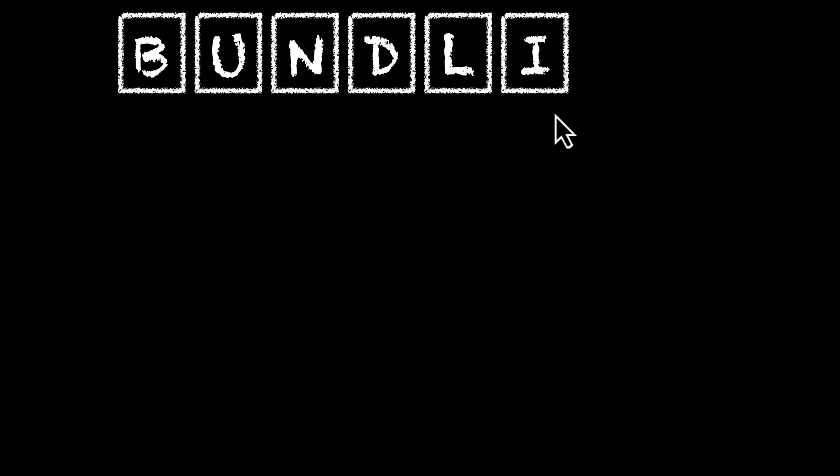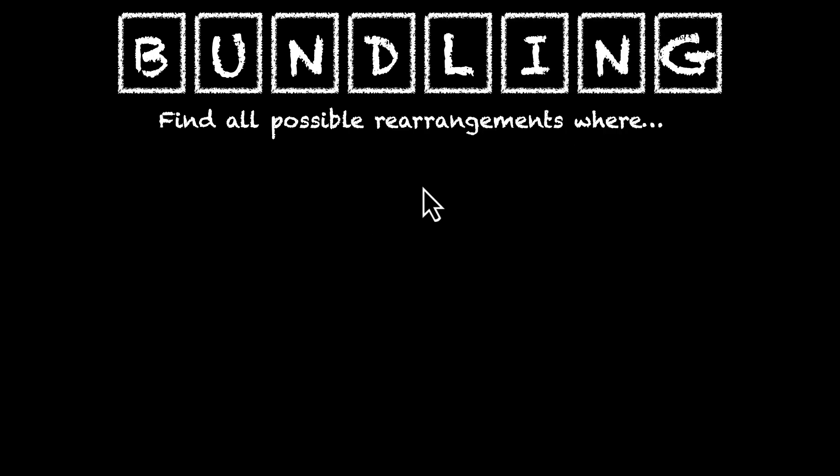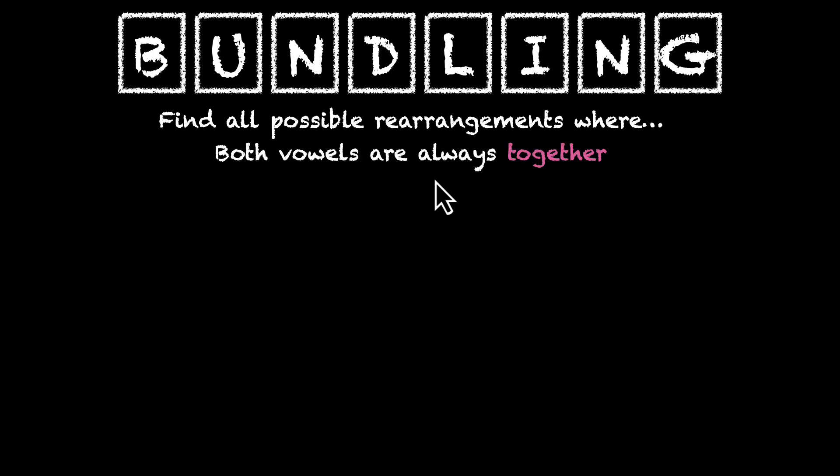In this video, we're going to learn about bundling. And as always, the best way to do this is by solving a problem. Here's what we have — we have the letters of the word bundling: B-U-N-D-L-I-N-G. And what we have to do is we need to find all possible rearrangements where both the vowels are always together.